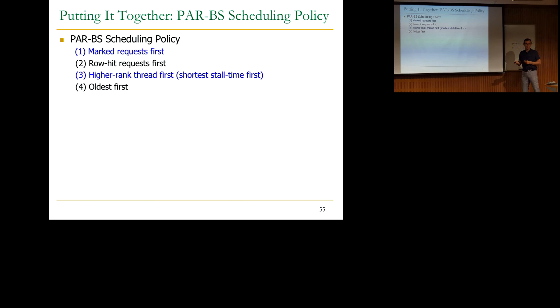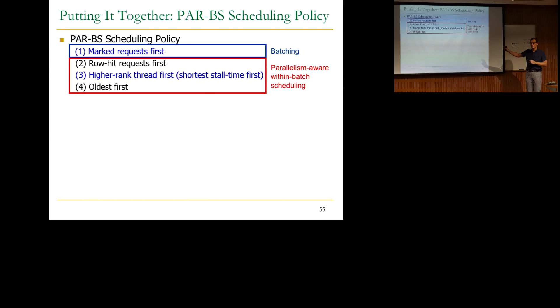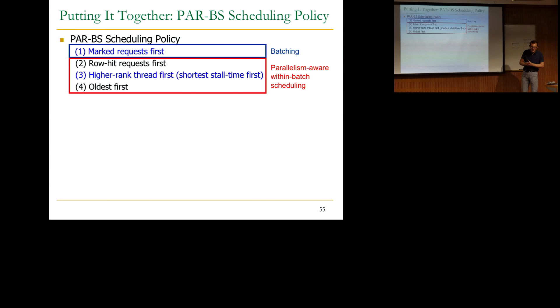Regarding the marking — is it like a sliding window? Yes. In the algorithm described, you form a new batch after all the previous marked requests are done: the number of marked requests goes to zero, and then you start marking again. We've also looked at continuous marking — what if you mark and already have some requests, you mark some of them again? You could have oldest batch, second oldest batch, third oldest batch, and everything else unmarked. We've looked at all those schemes.